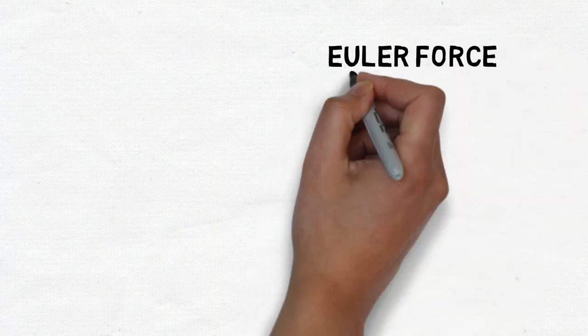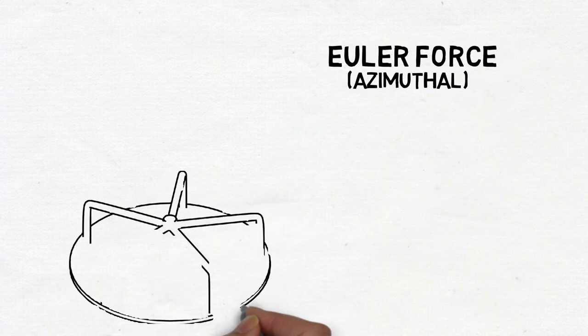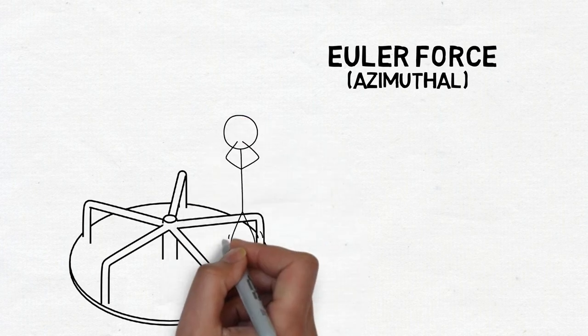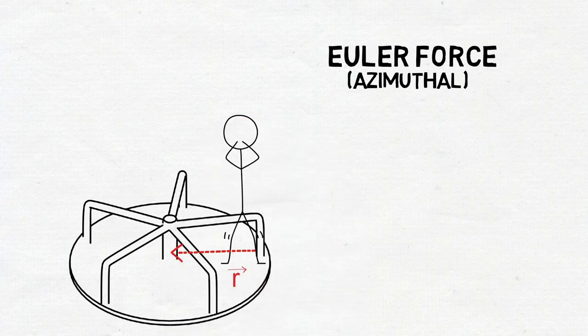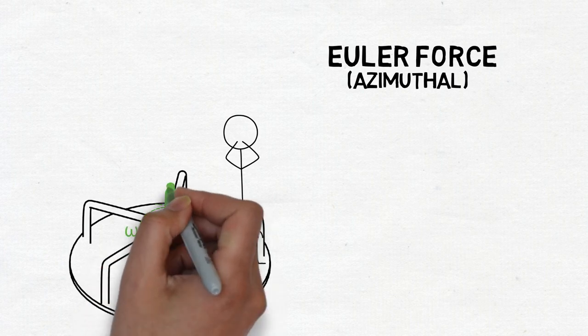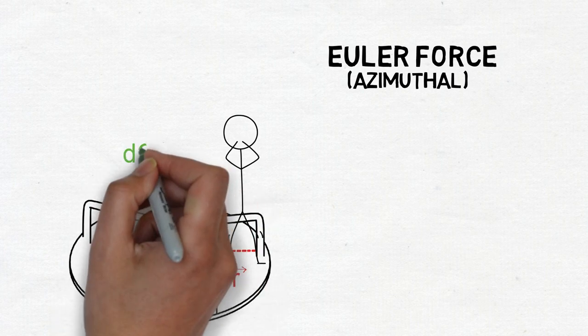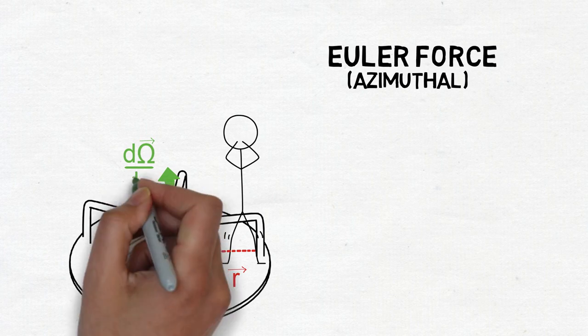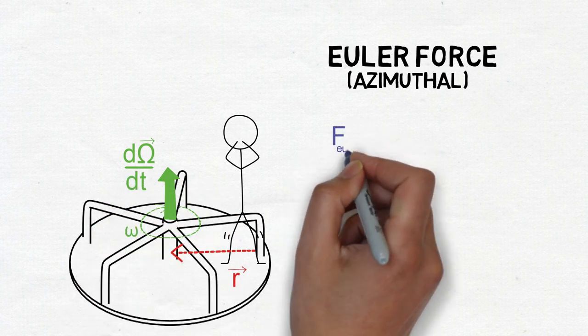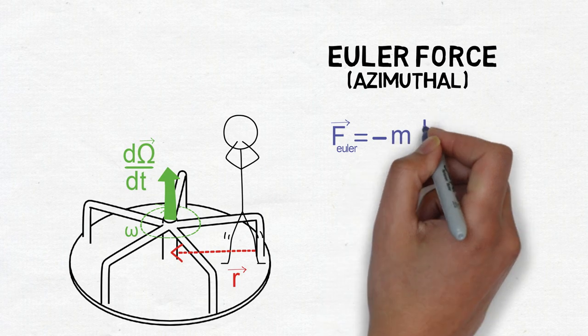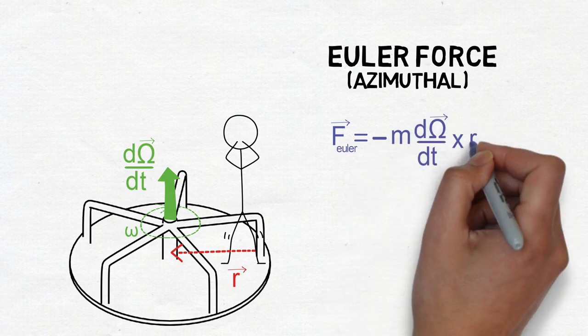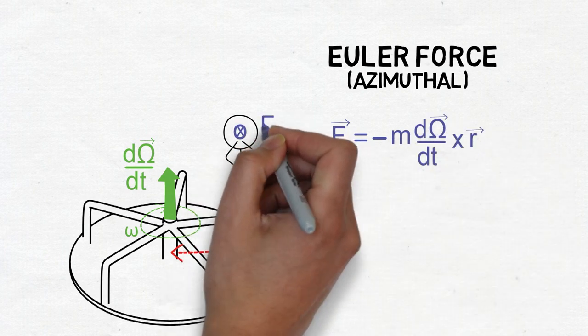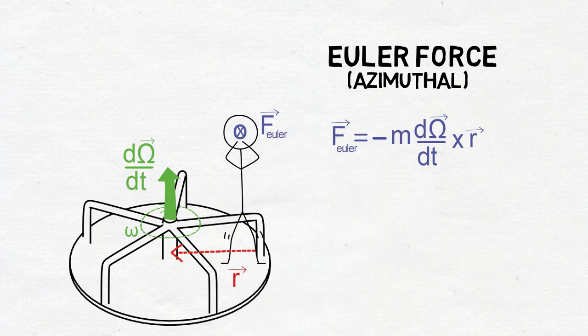The last fictitious force is called the Euler force or azimuthal force. Imagine Mario is standing on the merry-go-round with a distance r from the center and someone is pushing him. This will cause a change in angular velocity. We can express this as a vector d omega dt. The fictitious Euler force acting on him is given by negative m d omega dt cross r. In this case the cross product will give vector pushing Mario inwards.